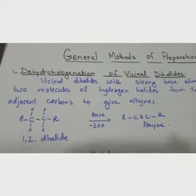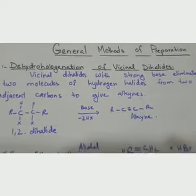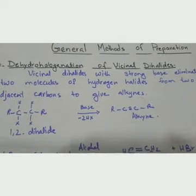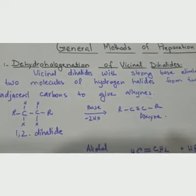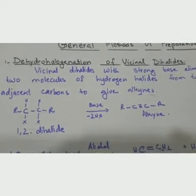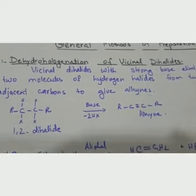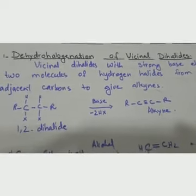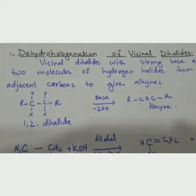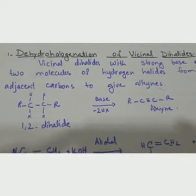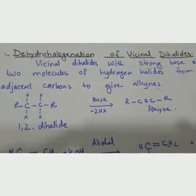Now we will see the general methods for the preparation of alkynes. The first method is dehydrohalogenation of vicinal dihalides. Here we want to introduce a triple bond into a saturated compound — we need to increase the carbon-carbon bonds and eliminate the bonds between carbon and other elements or groups.